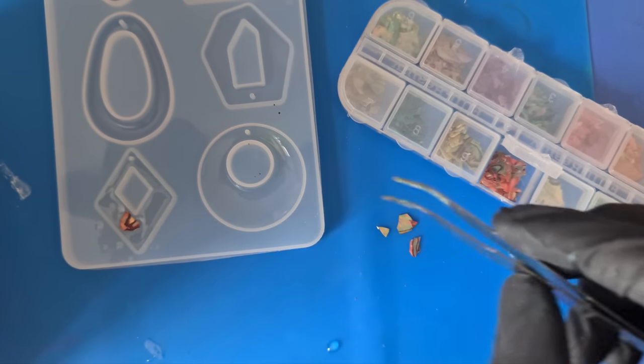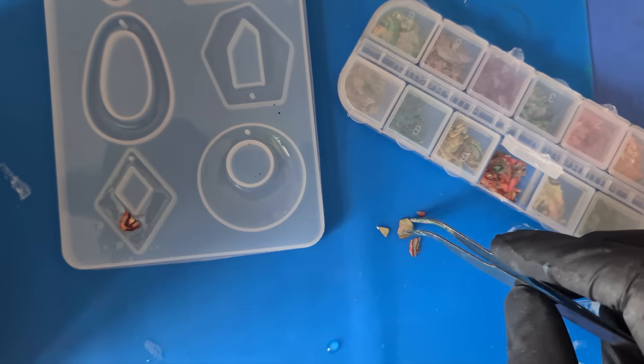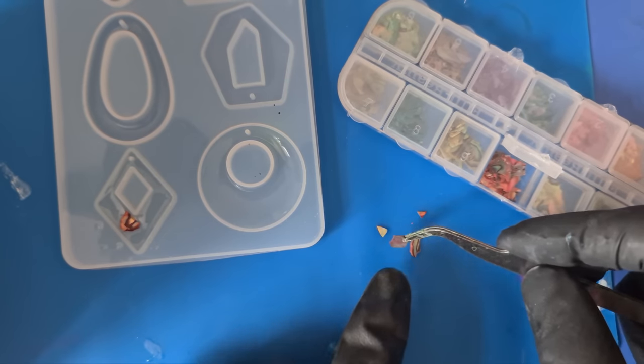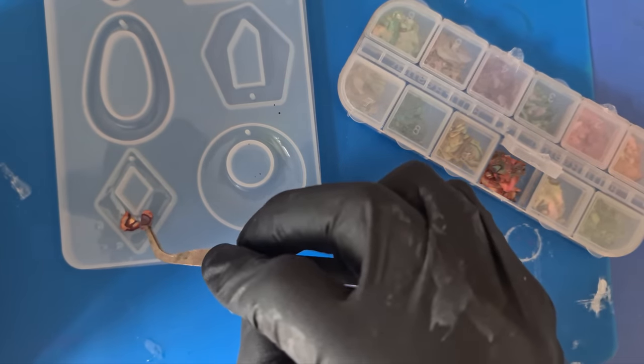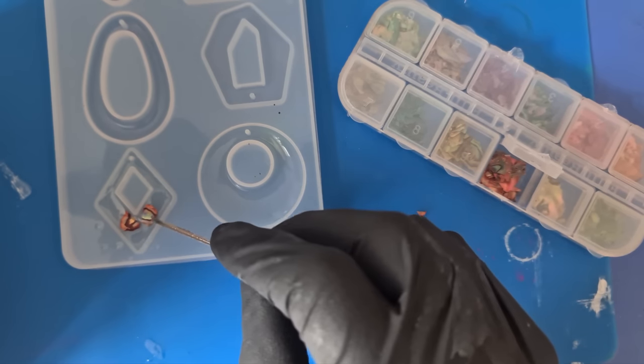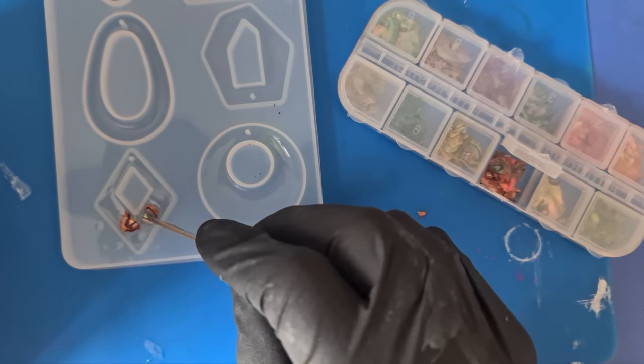And then I'm just going to place the most colorful side down into the resin that we've put in, and then just gently push down. Try and get any bubbles out because we don't really want any bubbles.